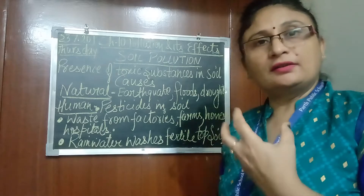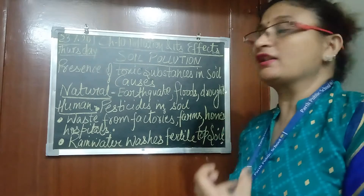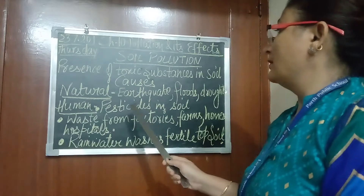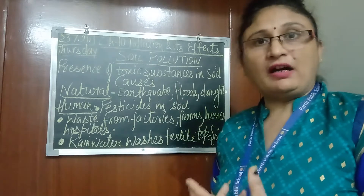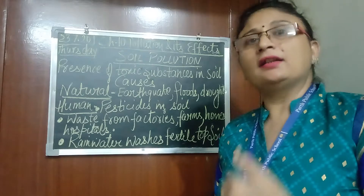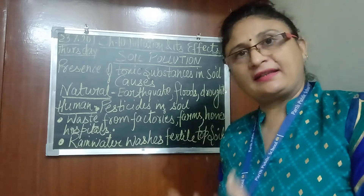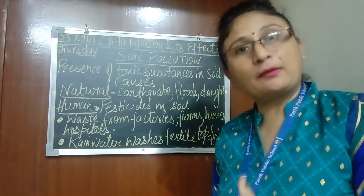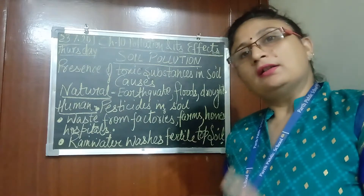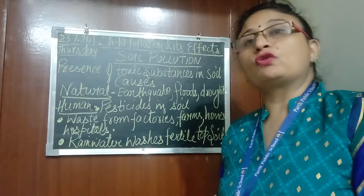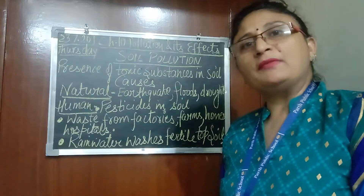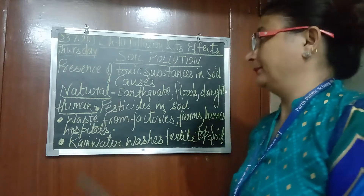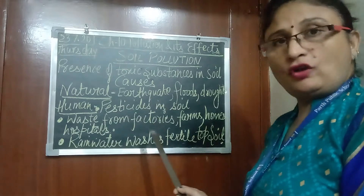But mainly humans are mostly responsible for affecting the quality of soil. Farmers who are growing crops use a lot of pesticides and insecticides to spray, so that crops are not damaged by pests and insects. But if they use pesticides in large quantities, they mix with the water and also affect the fertility of soil.